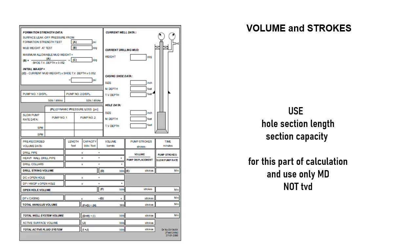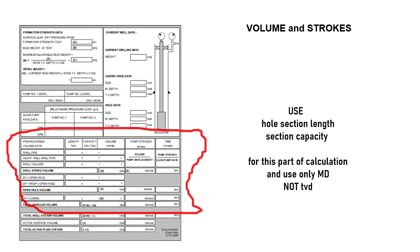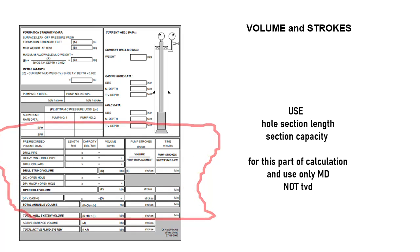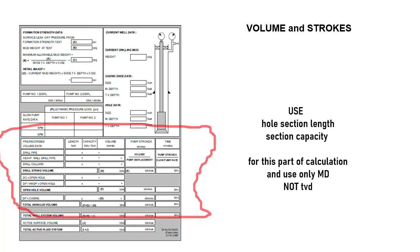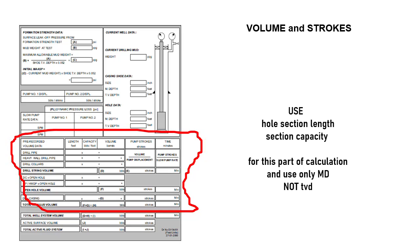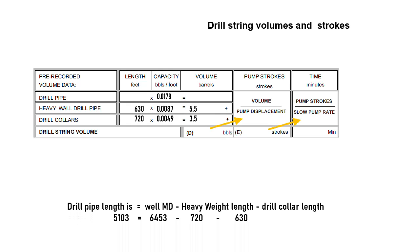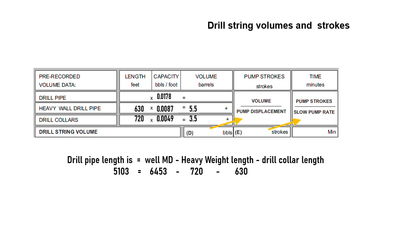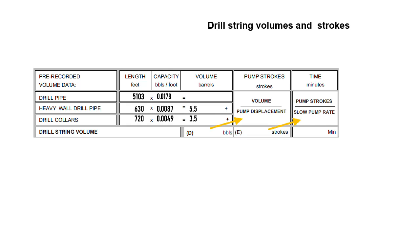Now we move to volume and stroke calculations. Use only MD — pipe length and capacity for each section. Do not use TVD; we have to use MD. Drill pipe length is equal to the well MD minus heavy weight length and drill collar length, and we get 5103 feet.